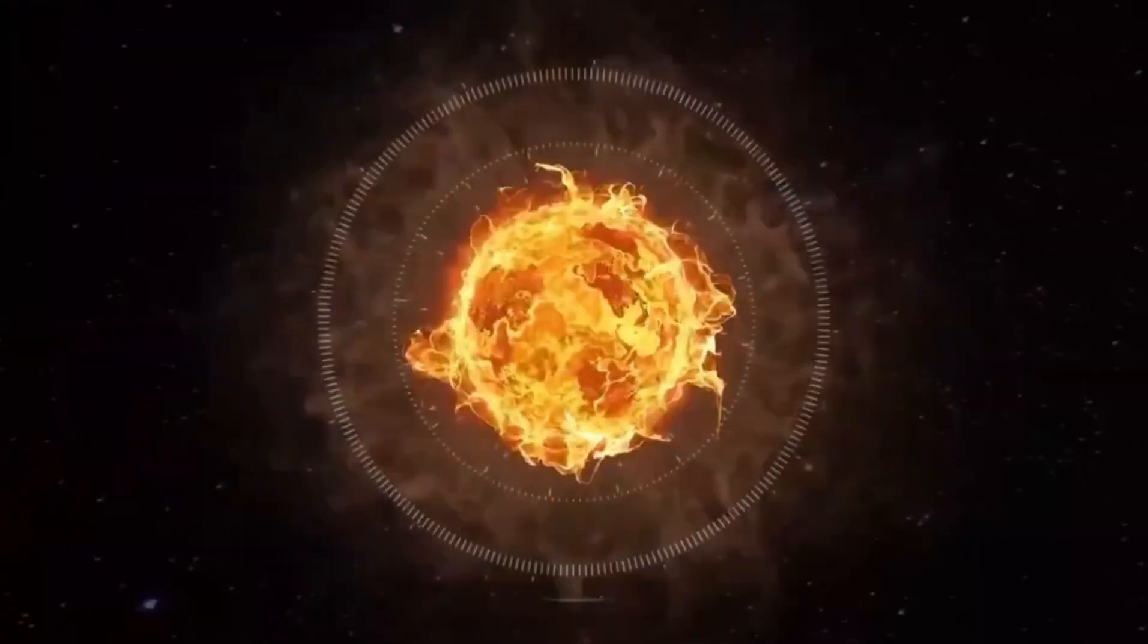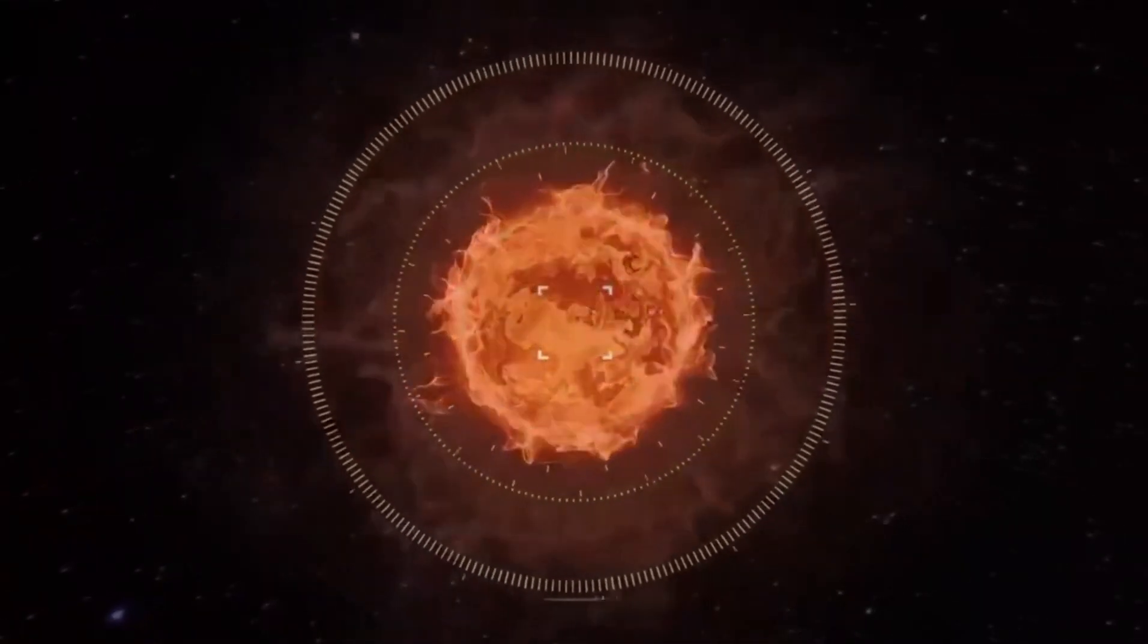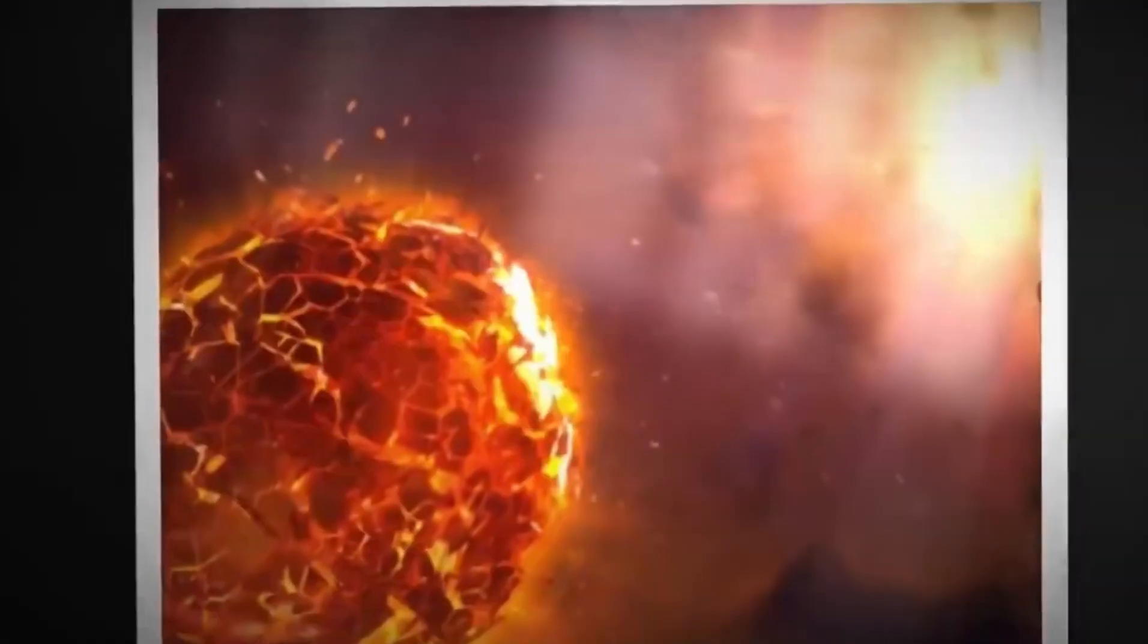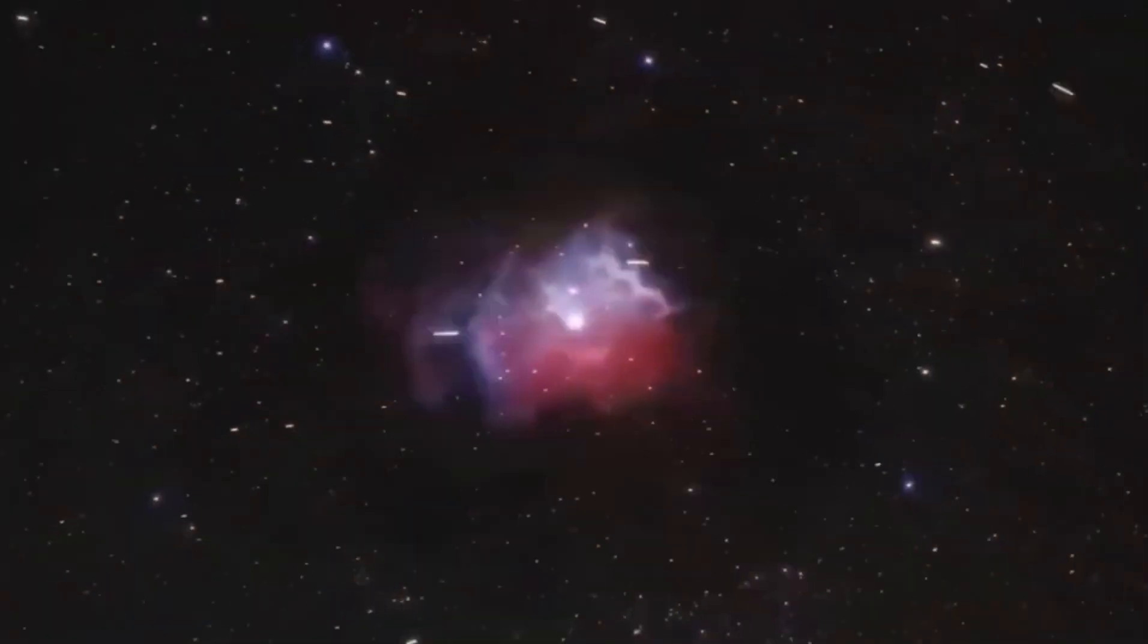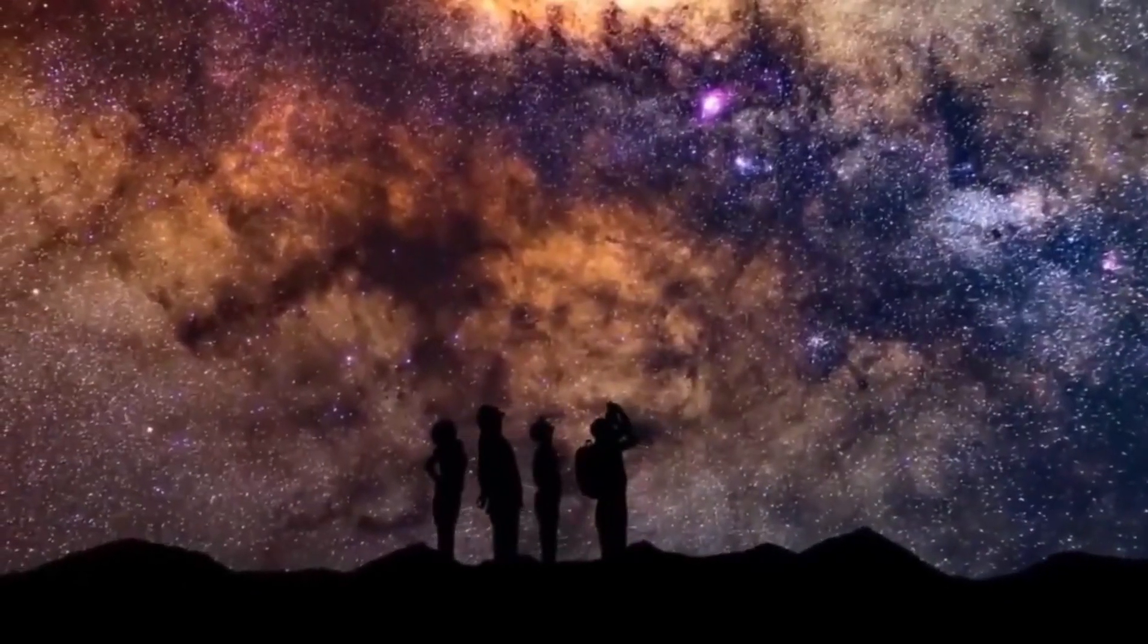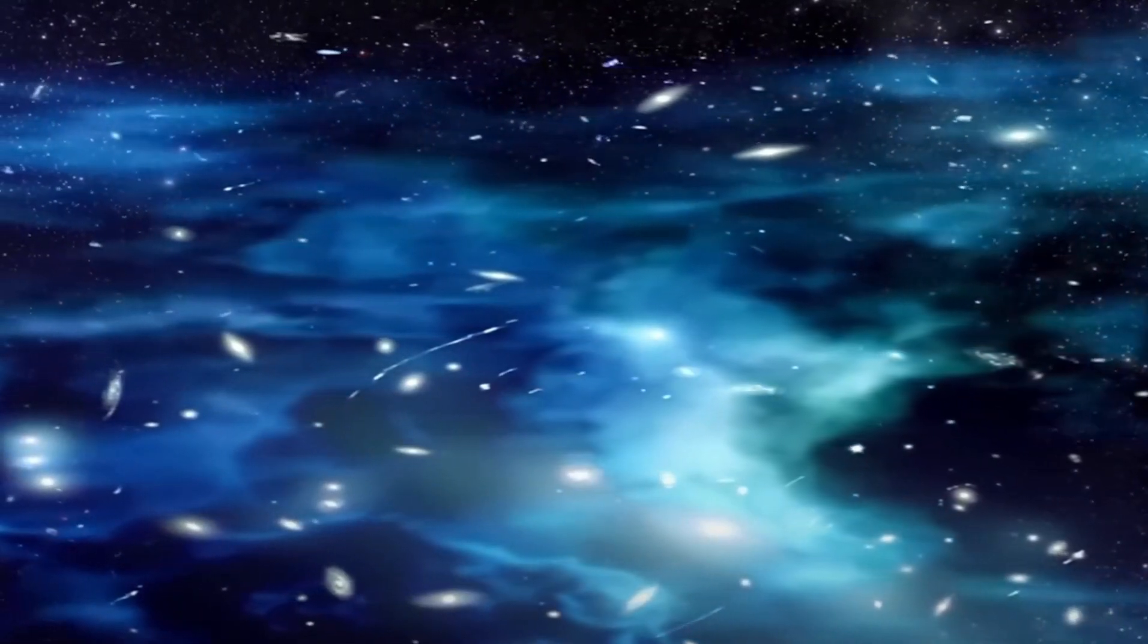Recent observations have suggested that Betelgeuse might be in a late phase or nearing the end of the core carbon burning process. This stage involves the conversion of carbon into heavier elements like oxygen and magnesium. If this is indeed the case, experts predict a core collapse leading to a supernova explosion could occur within a few tens of years.